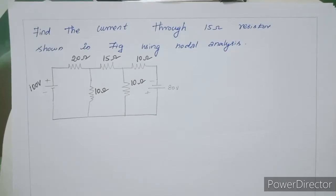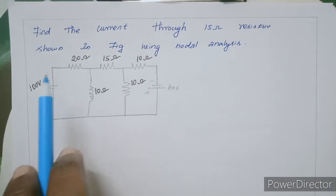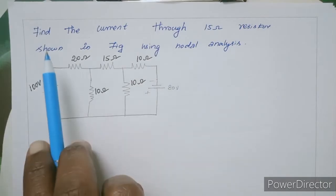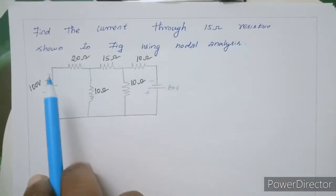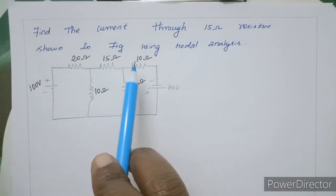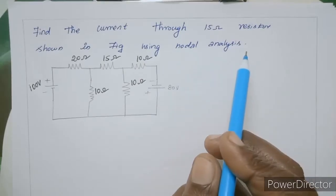Hi students! Now we have a problem in nodal analysis. Find the current through the 15 ohm resistor shown in the figure using nodal analysis.